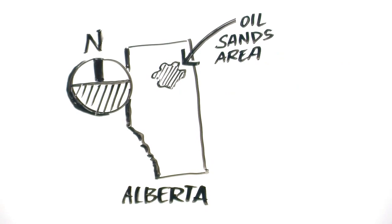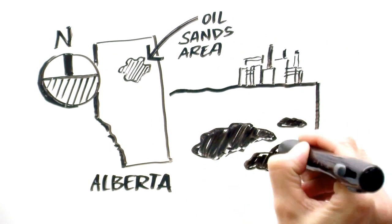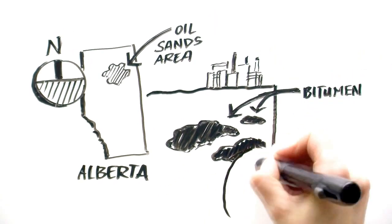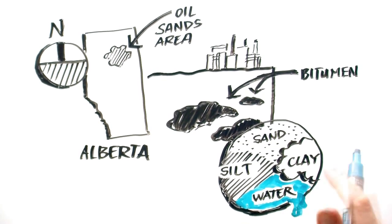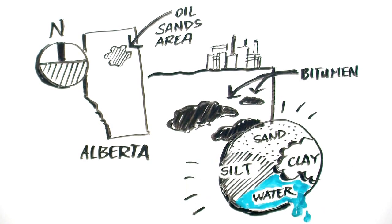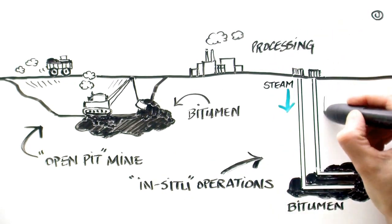In the Athabasca oil sands region in northern Alberta, one of the important uses for water is in industrial oil sands operations. The oil sands are an underground layer of nearly solid crude oil called bitumen that is mixed up with sand, silt, clay, and water. The oil sands provide a source of oil that is extracted by either mining or through in-situ operations depending on the depth.